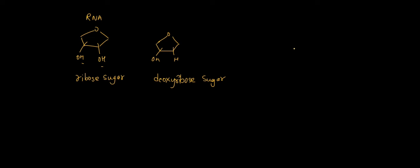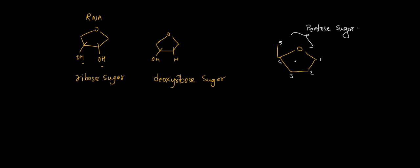If we draw the ribose or pentose sugar, it has five carbons: carbon number one, two, three, four, and five. That is why we call this sugar a pentose sugar. And the name of this sugar is ribose.